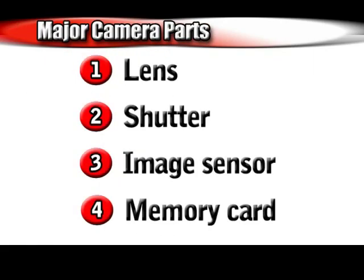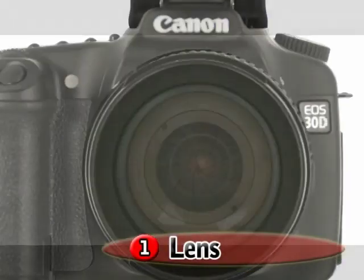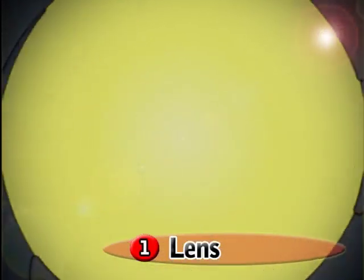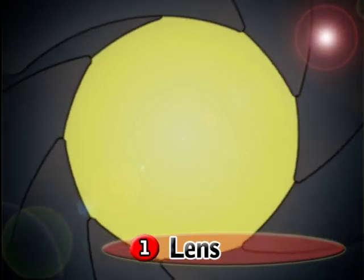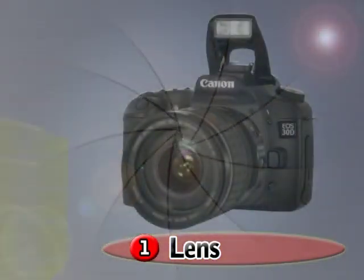To begin, a digital camera is comprised of four main parts. First, a lens which magnifies an image, focuses that image, and determines how much or how little light will enter the camera.